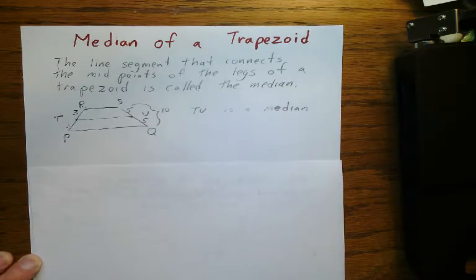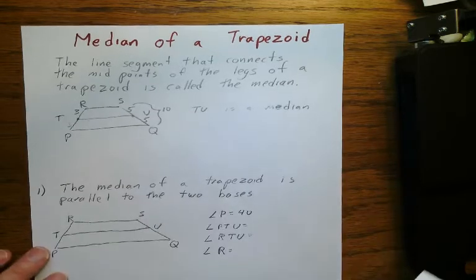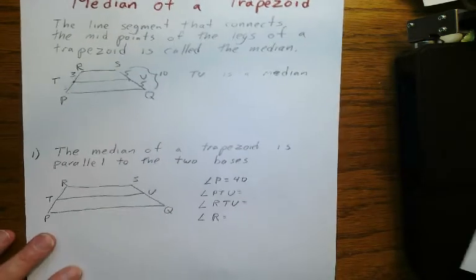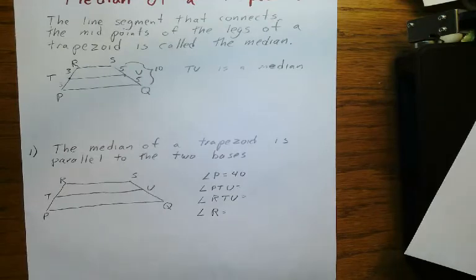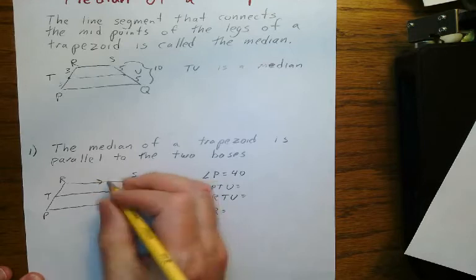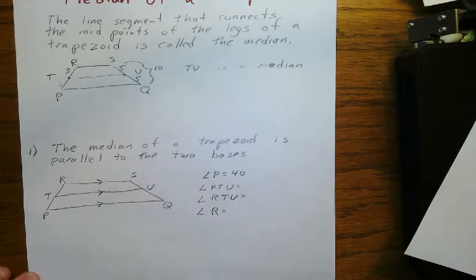The median has a couple of interesting properties. The median of a trapezoid is parallel to the two bases. So these three lines are parallel.